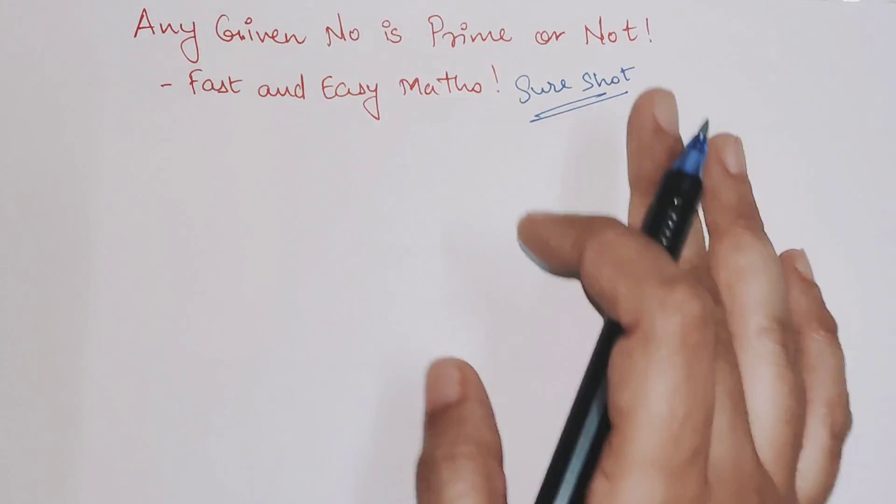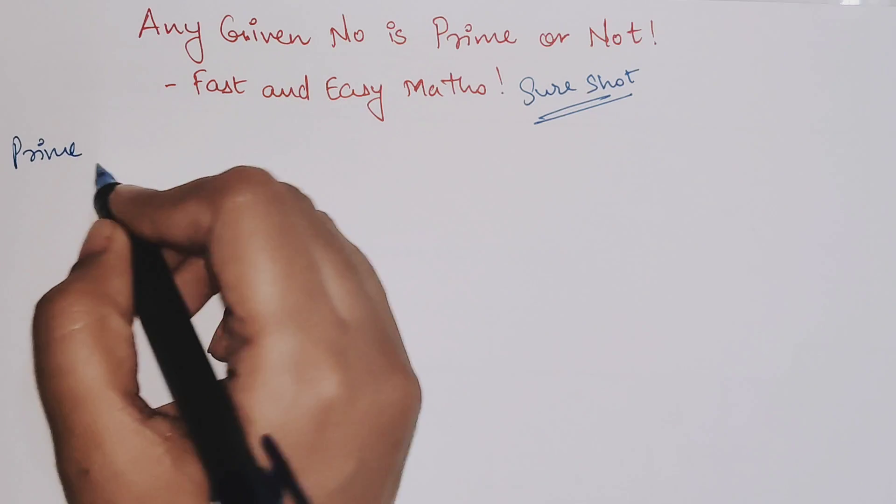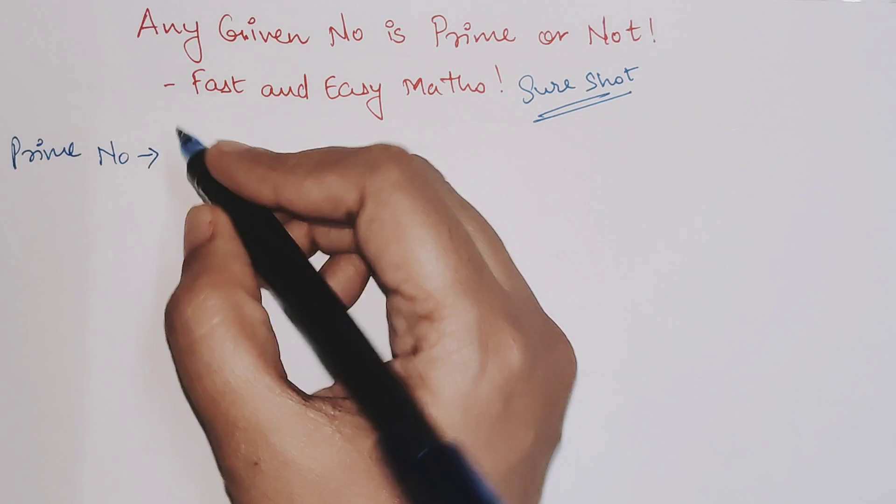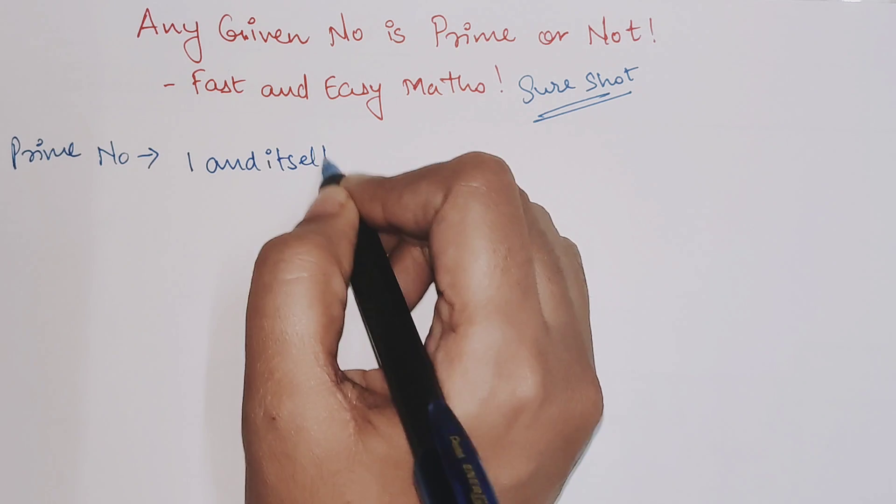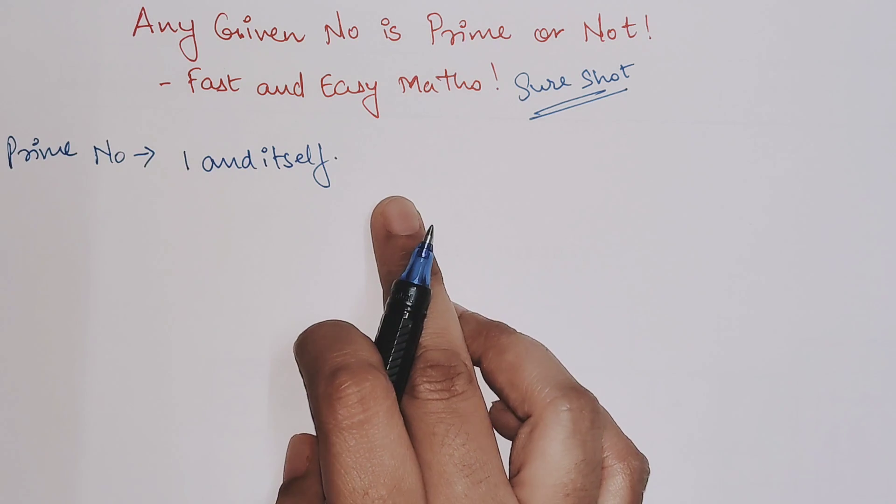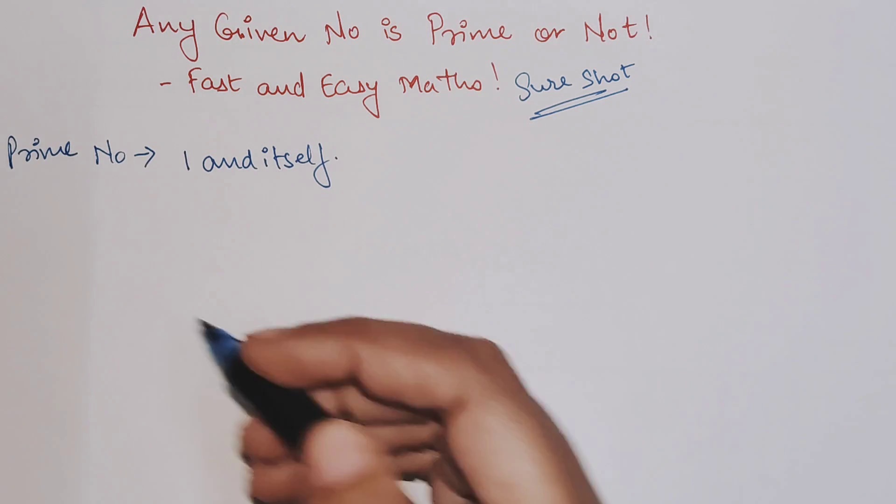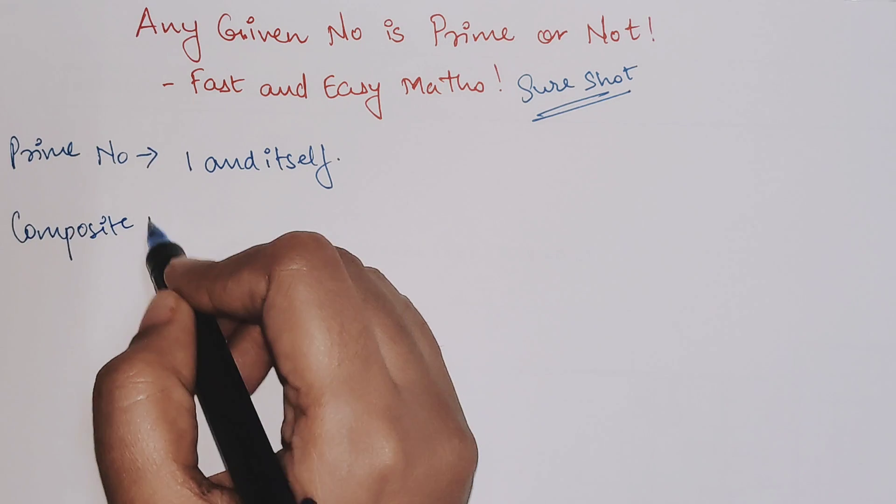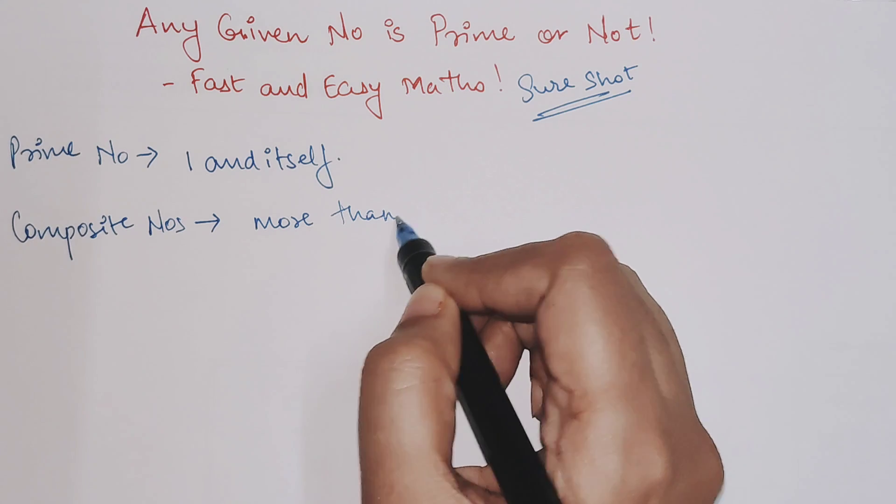Before beginning, let's quickly revise what is a prime number. A prime number has factors of one and itself only. It does not have any other factors. Any number with more than two factors, one and itself and some other factors, are called composite numbers.